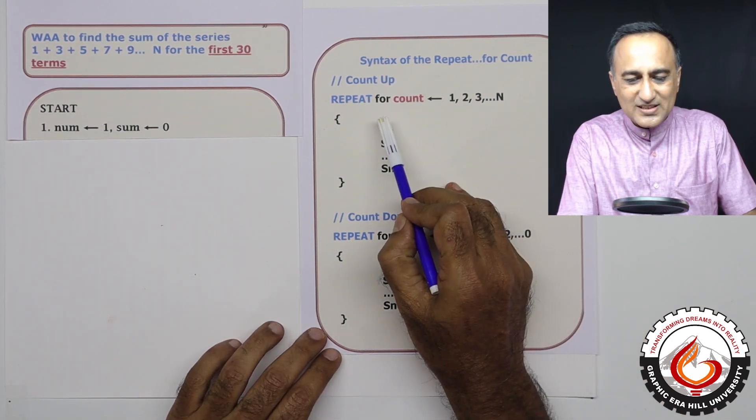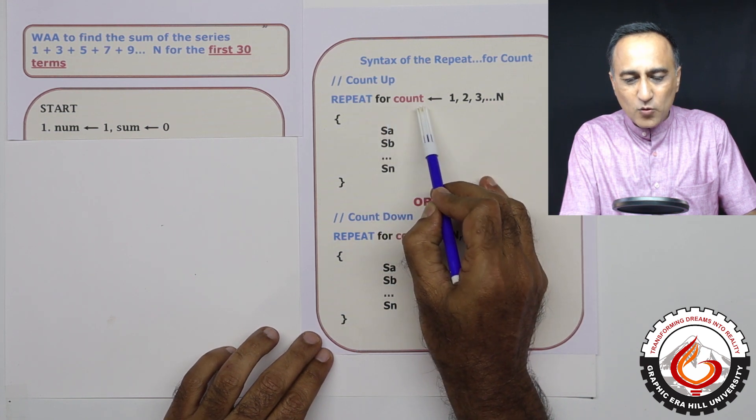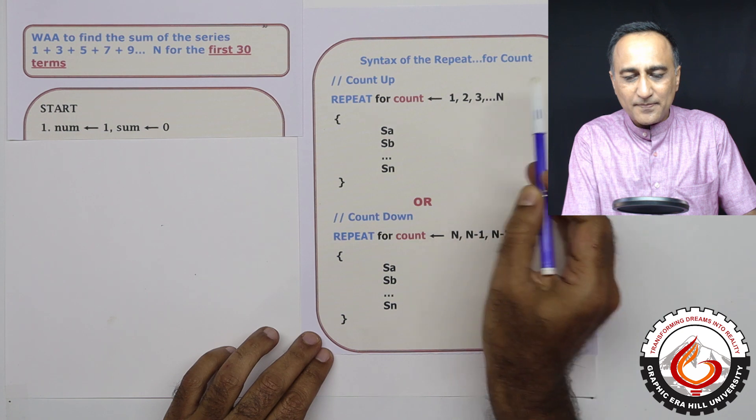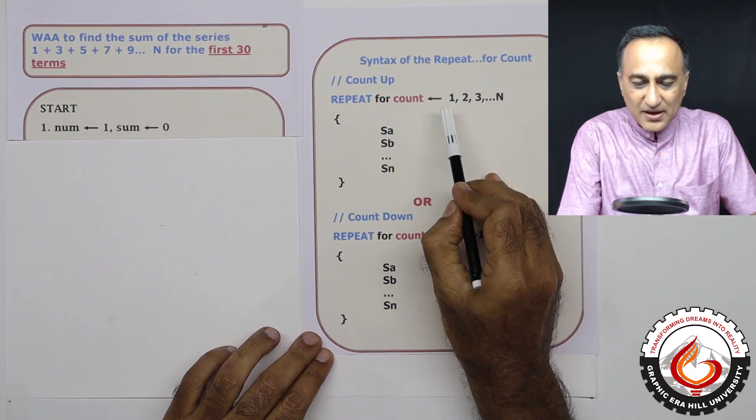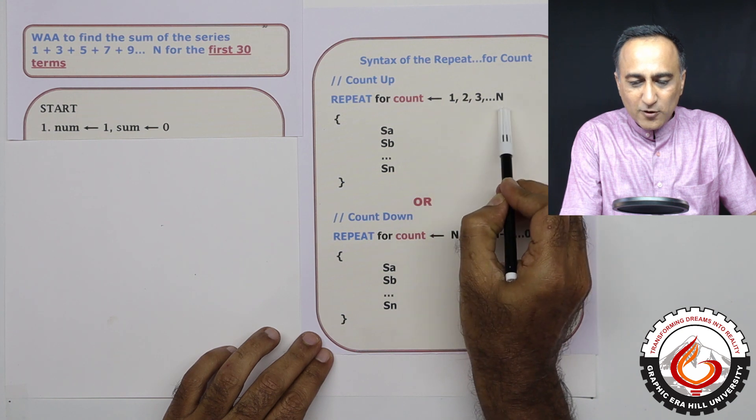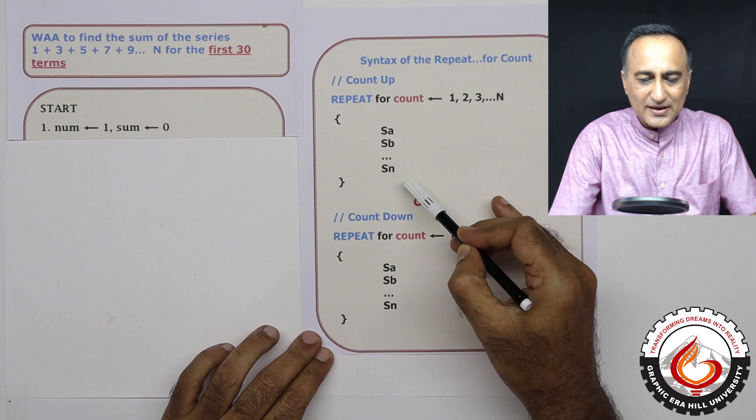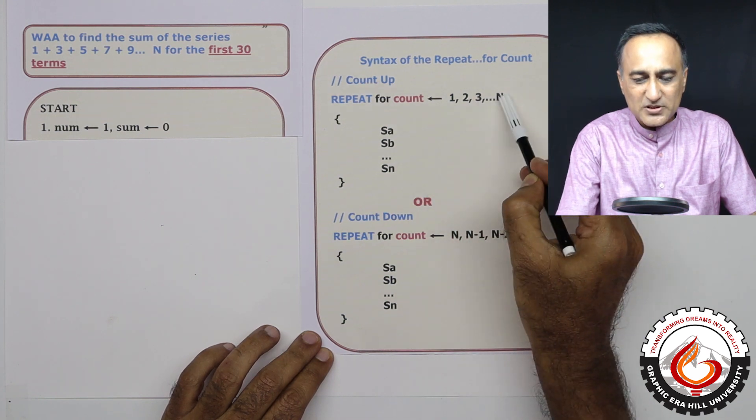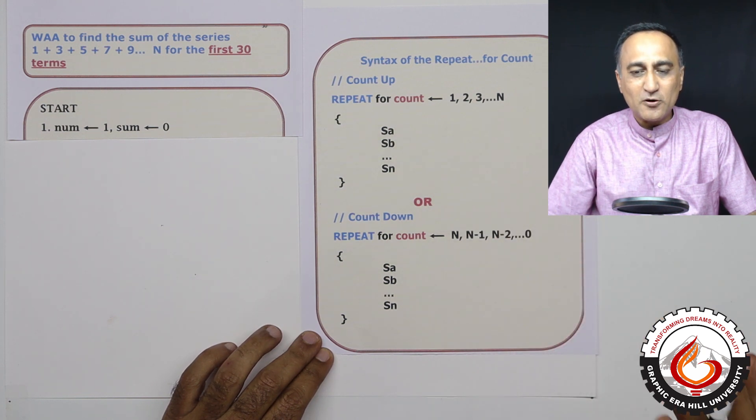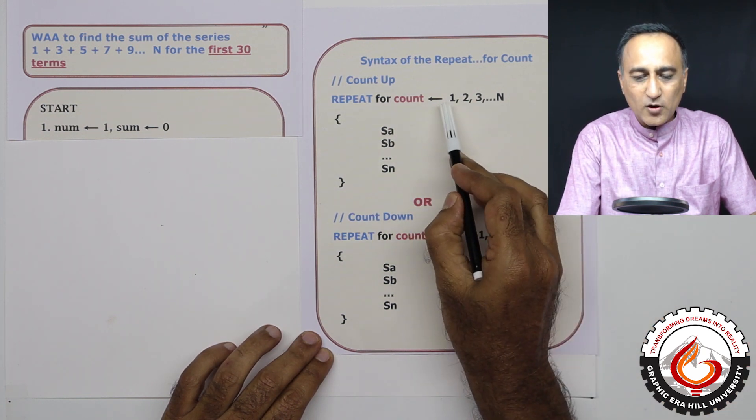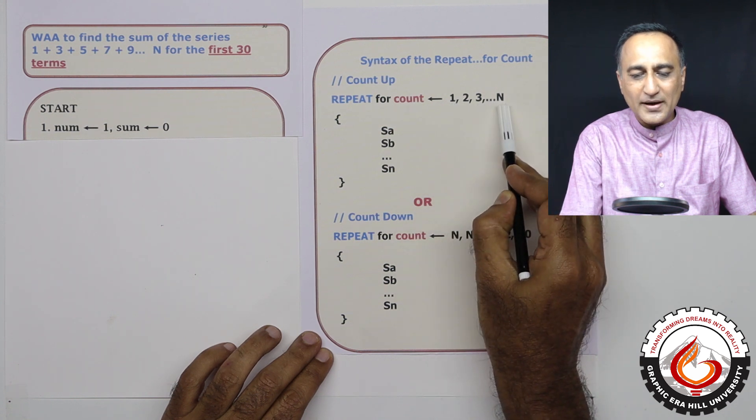So what this does is it says repeat for count starting from 1 to n. What it's actually doing here is based on the value of n, it is going to execute this block n number of times. Suppose n is five, these statements are going to be repeatedly executed five number of times. Count will always start from one in this case and it will increase by one and go to n.